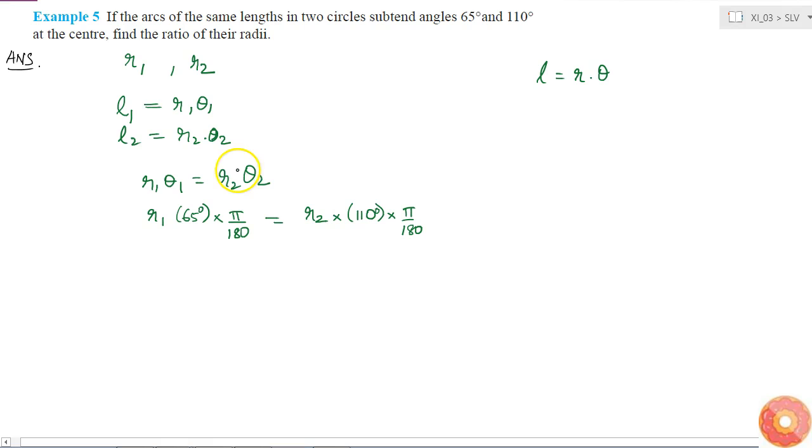So if I cancel pi by 180 from both sides, I'll get r1 into 65 is equal to r2 into 110. So r1 by r2 is equal to 110 by 65.